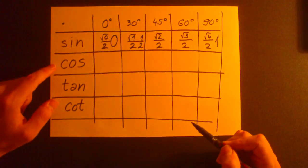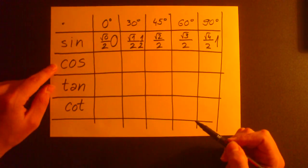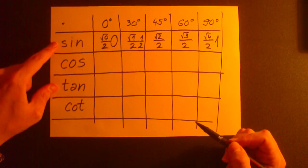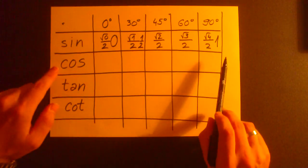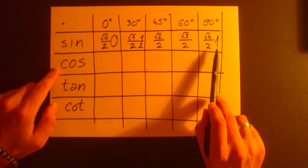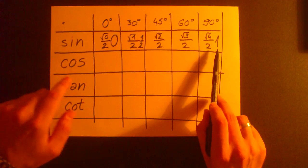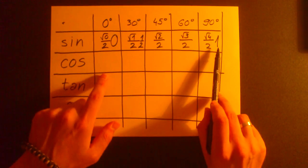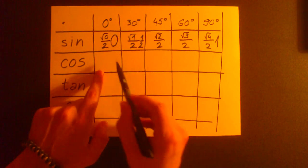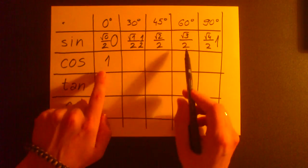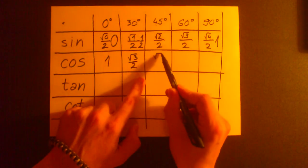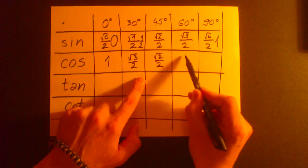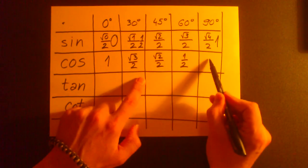In the cosine row we will write values like in the sine row but in the opposite direction. So cosine of 0 is equal to sine of 90 degrees, which is 1, and so on — then one-half, down to 0.